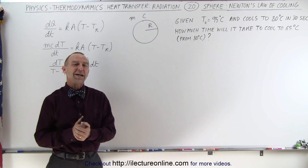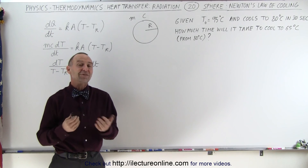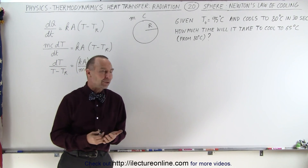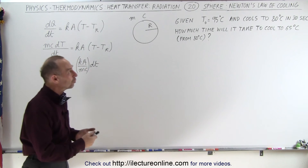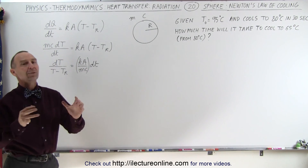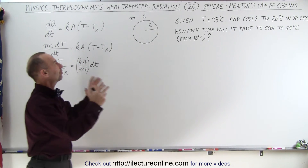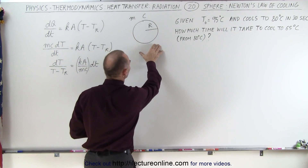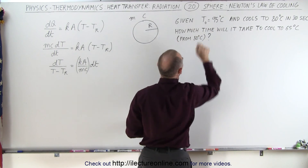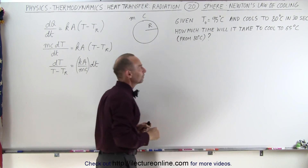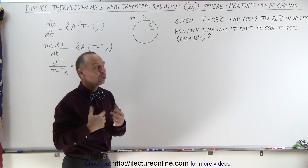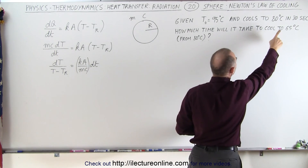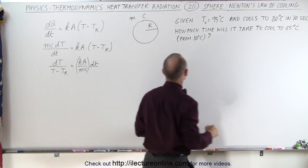Welcome to Electron Line. Our next video is an example of Newton's Law of Cooling. We start out with a sphere that has an initial temperature, T initial, at 95 degrees centigrade. And it cools down to 80 degrees centigrade in 30 seconds.